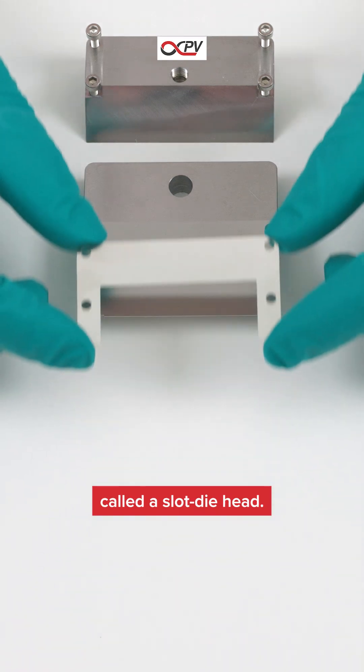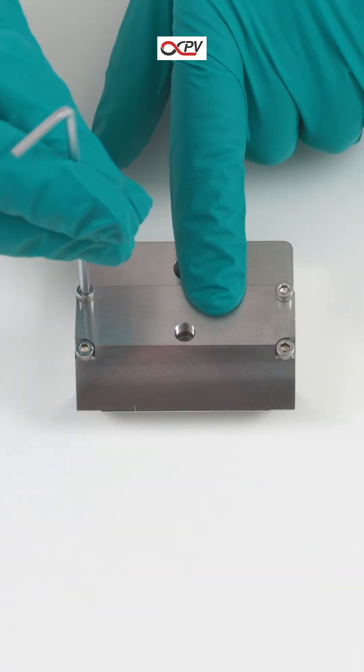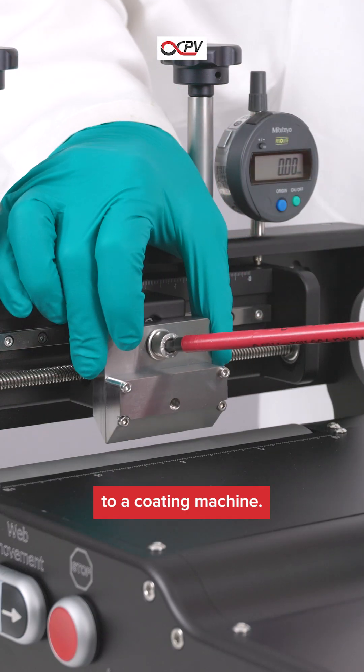First, you assemble a tool called a slot die head. Then, you attach it to a coating machine.